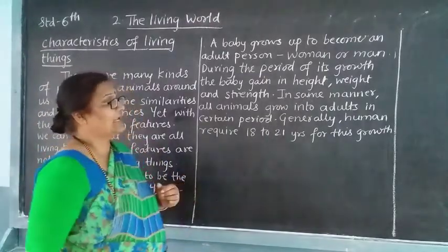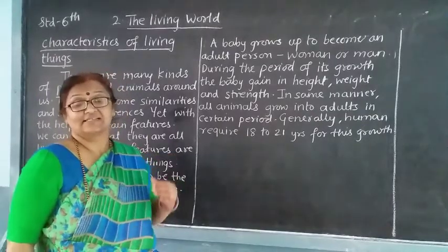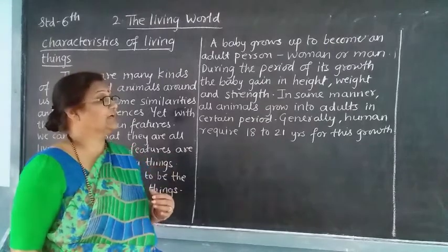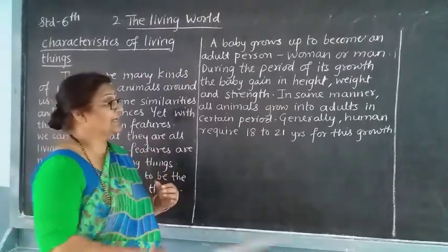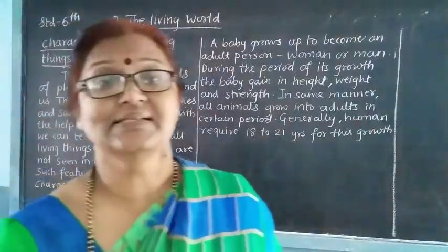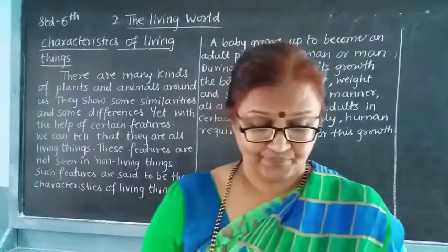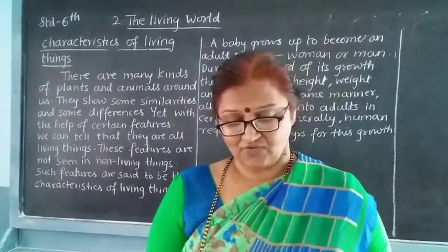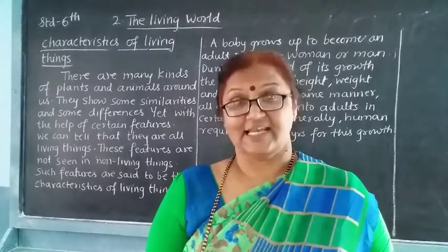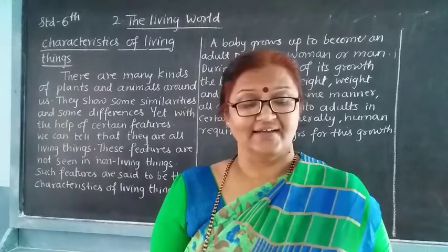In the same manner, all animals grow into adults within a certain period. There are many types of animals on this earth. They also grow into adults, but within a certain period. Generally, human beings require 18 to 21 years for their growth. In your textbook, find out how long it takes for young ones of hens, cows, and dogs to grow into adults.